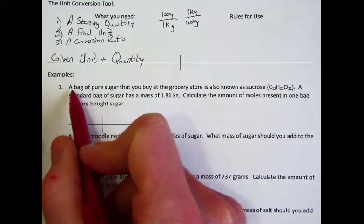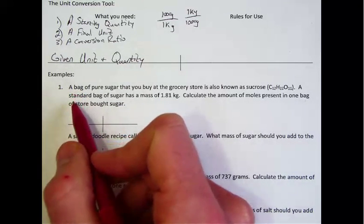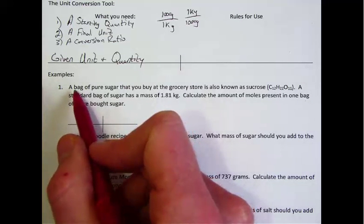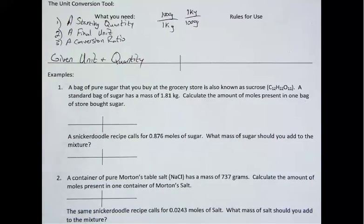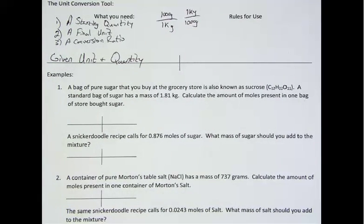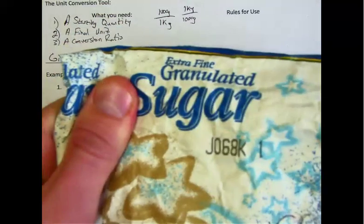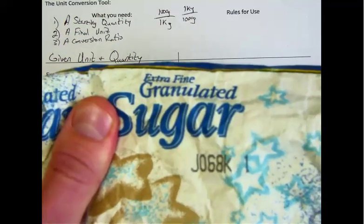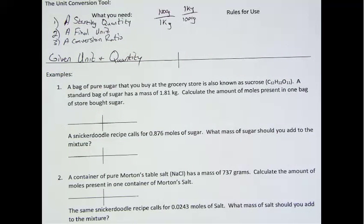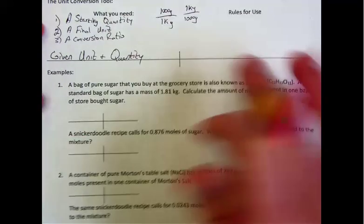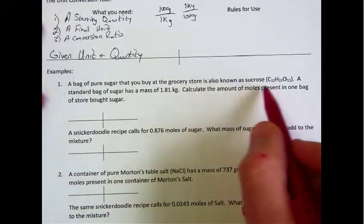So the first question, I went to the grocery store last night to pick up things for snickerdoodles. So when I was at the grocery store, I was walking around and thought, wouldn't it be fun to determine how many moles of sugar are in a container of sugar? So we looked at the side of the bag and discovered that sugar, which is sucrose C12H22O11, when you purchase it at the store, the standard bag has a mass of 1.81 kilograms.